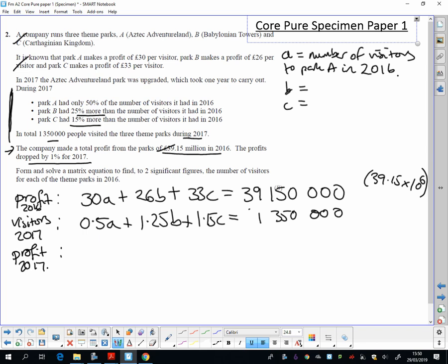Now we're going to have to do a bit of work because we've now got to combine the visitors with the profit. For example, profit in 2017 for A is going to be 30 pounds per visitor, but the number of visitors has dropped by 0.5 - so 0.5A. Then for park B, I'm going to have 26 pounds per visitor, but there are now 1.25B visitors times that. And then for C, it's 33 times 1.15C. And their total profit was dropped by 1 percent, so 0.99 times my previous profit.